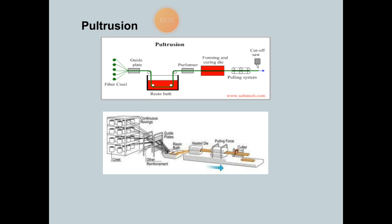The figure shows the schematic drawing of this process and the second figure shows the whole process as it runs in industry. The process starts with pulling continuous fiber from the fiber creel and passing through a resin bath. The composites are shaped and cured in a heated die and finally cut by the cutter.